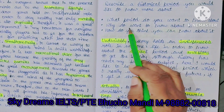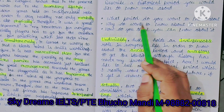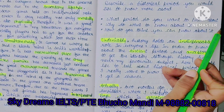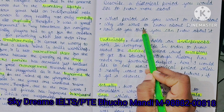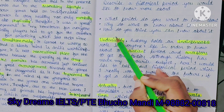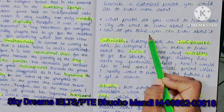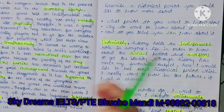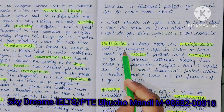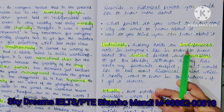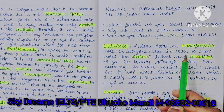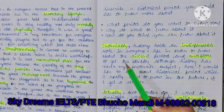Our cue card is: describe a historical period you would like to know more about. What period do you want to know about? Why do you want to know? How do you think you can know about it? Notably, history holds an indispensable role in everyone's life.